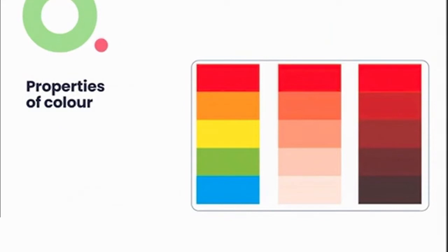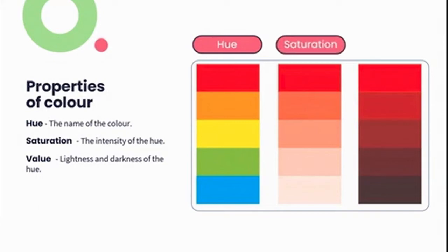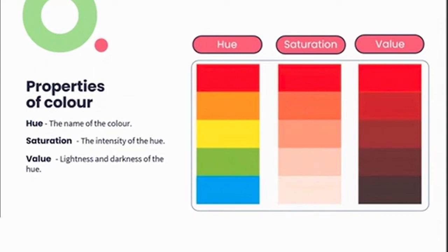Remember in Lesson 4, where we learned about elements and principles of design, we spoke about the properties associated with color: hue, saturation, and value. Hue is the name of the color — in this instance, our hue would be red. Saturation means how intense that specific color is, so how vibrant the red is. Value refers to how light or dark the color is — how much black has been added. By adding black to our hue, we've really darkened the red towards the bottom of the color strip.